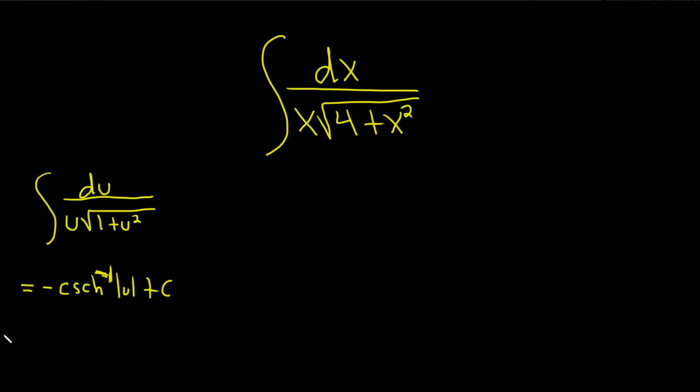And you can also write this as minus inverse hyperbolic sine of 1 over the absolute value of u. So some books have both, the book I'm following has both of these formulas. That's a negative 1 there, by the way.